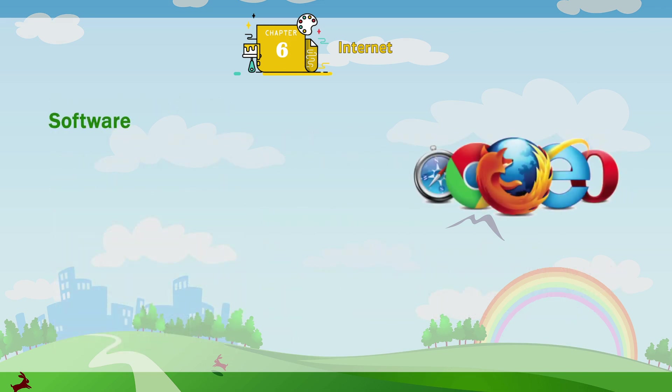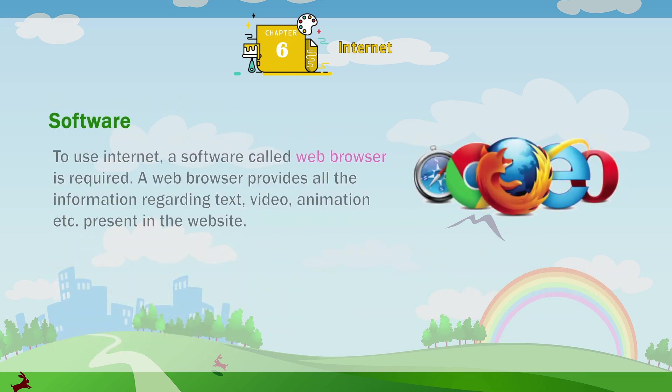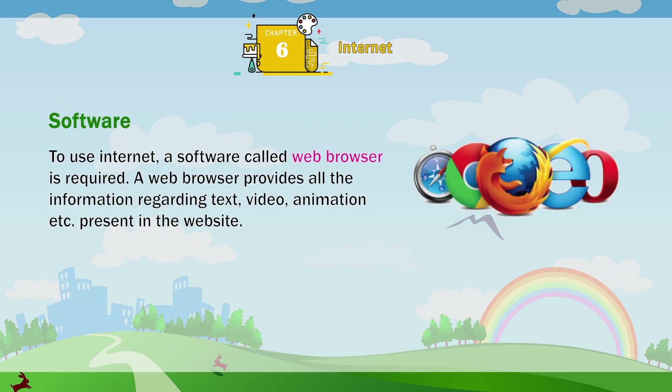Software: to use internet, a software called web browser is required. A web browser provides all the information regarding text, video, animation, etc. present in the website.